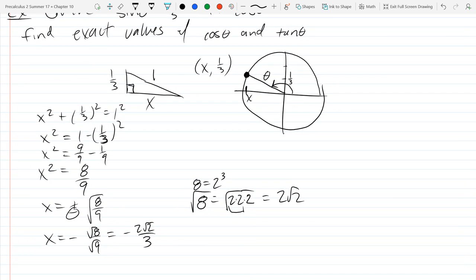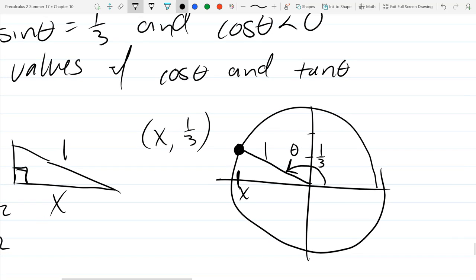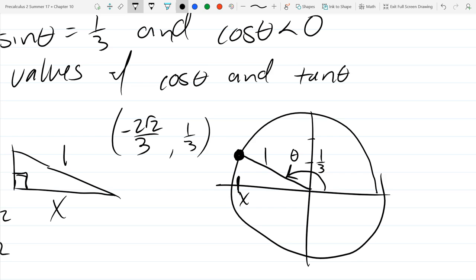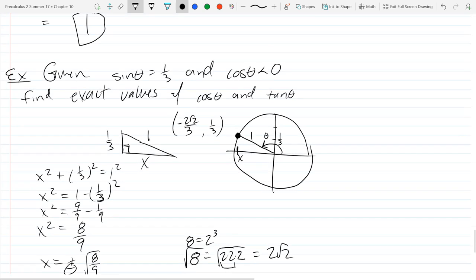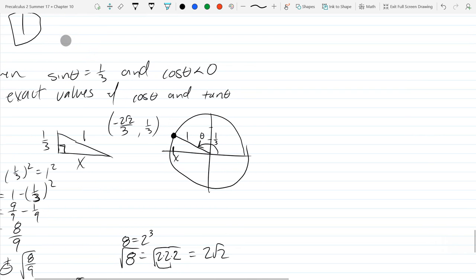So there is our x value. Remember, we're on the unit circle. I wrote theta where I normally would write the radius. So our radius is one. Our theta, I'll label theta right up there. So we got our x value is negative two square root two over three. Alright, we're ready to answer. We got our x and y coordinates. We can answer what is cosine and what is tangent.